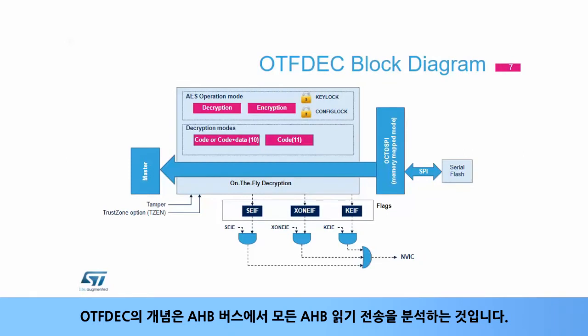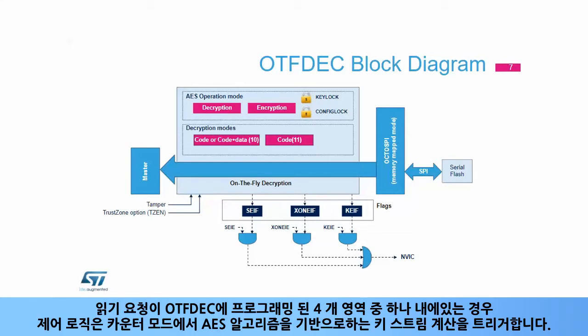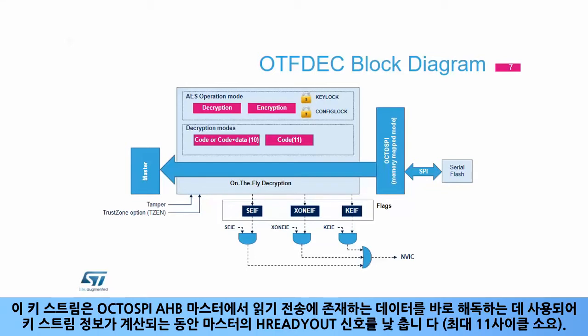The principle of OTF-DEC is to analyze all AHB read transfers on the associated AHB bus. If the read request is within one of the four regions programmed in OTF-DEC, the control logic triggers a keystream computation based on the AES algorithm in counter mode. The keystream is then used to decrypt on-the-fly the data from the OctoSPI AHB master, tying low the H-ready-out signal while the keystream is being computed. This takes up to 11 cycles.